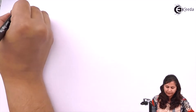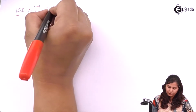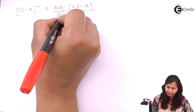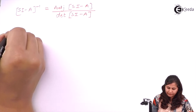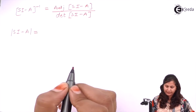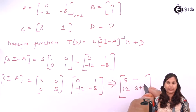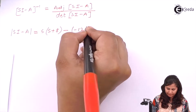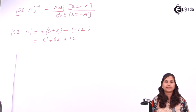Now we have to calculate (sI minus A) inverse, which equals the adjoint of (sI minus A) divided by the determinant of (sI minus A). Let us first calculate the determinant. The determinant of sI minus A is s times (s+8) minus (-12), which gives s² + 8s + 12.